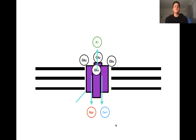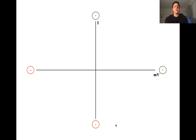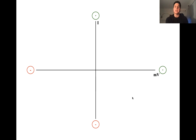We have many different ions moving in different directions through this open channel — so what is the net effect? The net effect depends upon the membrane potential. This graph shows how the net current through an open AMPA receptor varies with the membrane potential, based on experimental data where we vary the membrane potential and measure the current moving through the open AMPA receptor.